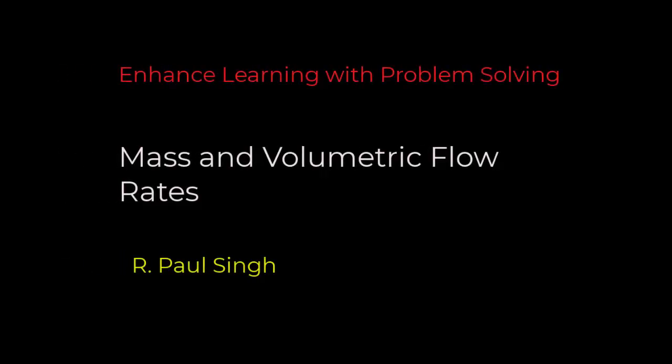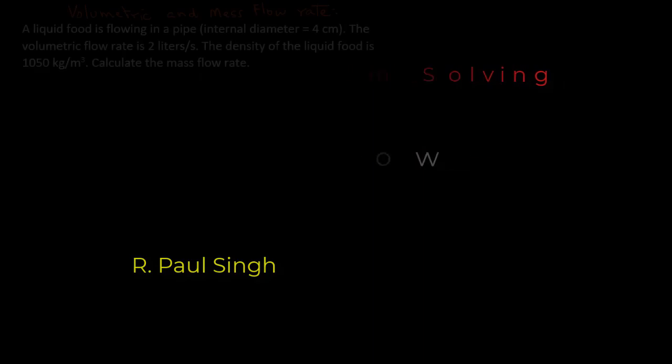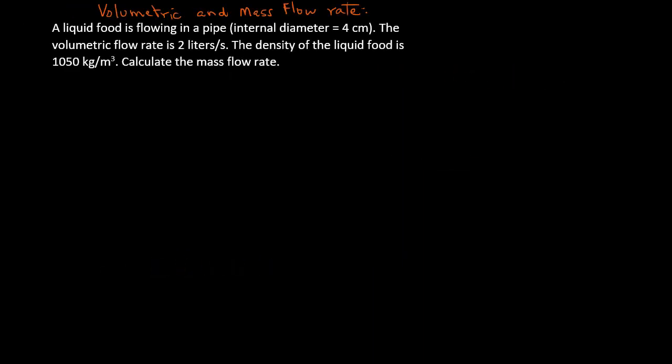In this tutorial we will look at how to convert volumetric flow rate into mass flow rate. The problem statement is: a liquid food is flowing in a pipe, the internal diameter of that pipe is four centimeters, the volumetric flow rate is two liters per second, the density of the liquid food is 1050 kilograms per cubic meters, and we want to calculate the mass flow rate.